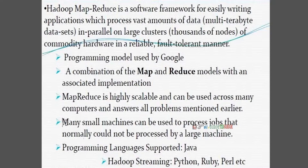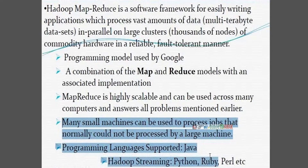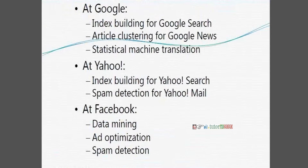Many small machines can be used to process jobs that normally could not be processed by large machines. This programming model can be written using Java, Python, Ruby, R programming — many OOP concepts are supported. Most folks are writing MapReduce applications using Java. Real-time use cases: Google uses it for index building for Google Search, article clustering for Google News, and statistical machine translation. Yahoo uses it for index building and spam detection. Facebook uses it for data mining, ad optimization, and spam detection.